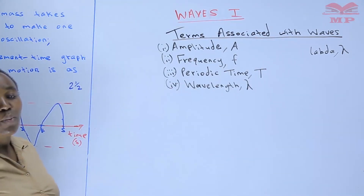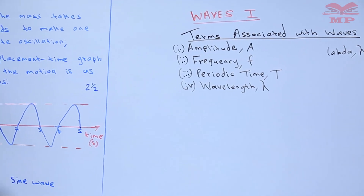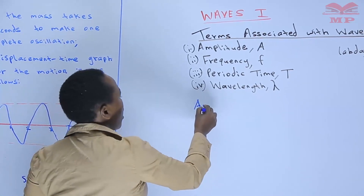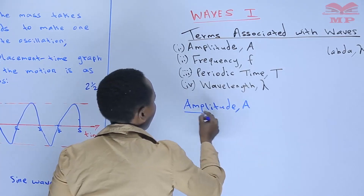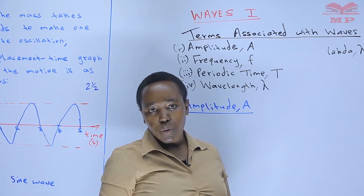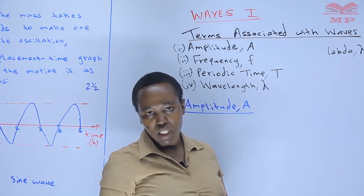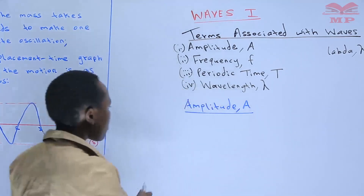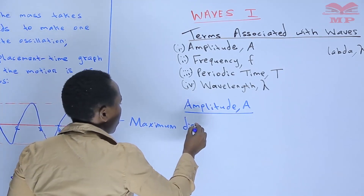Those are the terms we want to discuss with reference to the wave shown here. We'll start with the first term: amplitude. What is amplitude? When we talk of amplitude, it refers to the maximum displacement from the mean position.